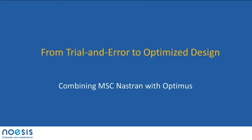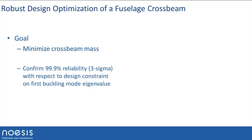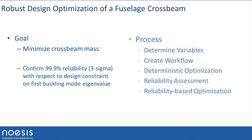Now let's go through these steps on a real case made for an aircraft manufacturer. The purpose was to minimize the mass of a cross beam — the beam that supports the floor inside an aircraft — and to confirm 99.9% reliability, which is a three-sigma design, with respect to the design constraint on the first buckling mode. The process followed was to identify the inputs, create the workflow, do a deterministic optimization to find the optimum design, assess the reliability, and if the 99.9% is not reached, perform a reliability-based design optimization to find a reliable design.